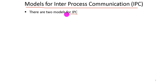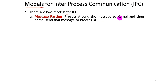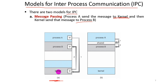There are two models in IPC. The first is message passing. Process A sends a message to the kernel — the kernel is the backbone of the operating system, lying between hardware and application software. The kernel then forwards the message from process A to process B.